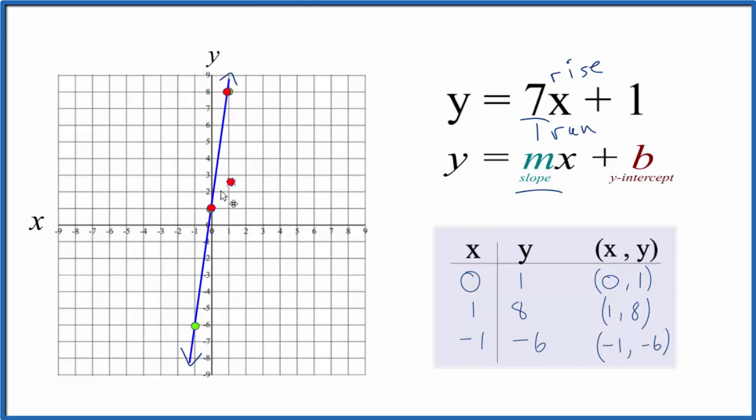Let's go to the y-intercept and go down 7, 1, 2, 3, 4, 5, 6, 7, over 1 in the opposite direction. And you can see these points are all on the line here, so we did the first part correctly.